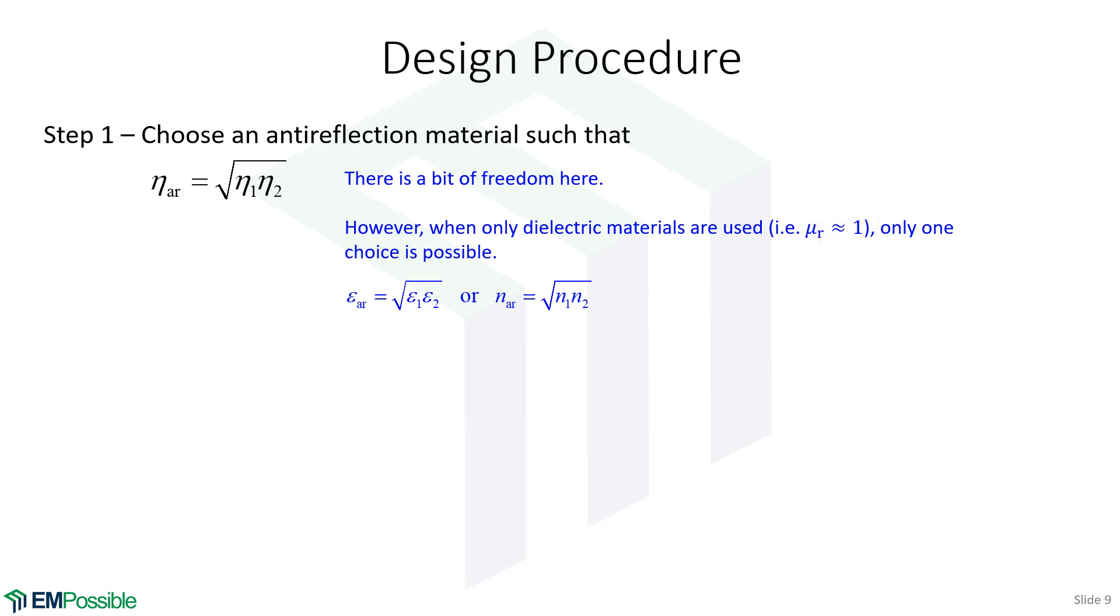Now, in this case, we can choose the anti-reflection layer in terms of the permittivity or refractive index instead of impedance. And that's because impedance is no longer a function of the permeability, only permittivity. So we don't even have to think in terms of the impedance. And so if we want to do it in terms of dielectric constant, the dielectric constant of the anti-reflection is the geometric mean of the two dielectric constants we're trying to match. Or much more commonly is it's done through refractive index. We're trying to match refractive index 1, the refractive index 2. And we choose the refractive index of the anti-reflection region as the geometric mean.